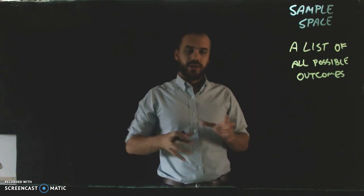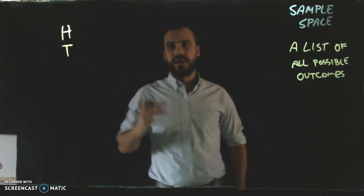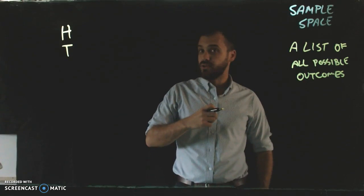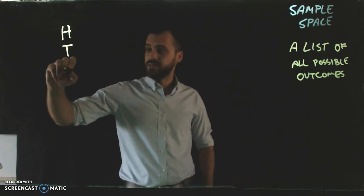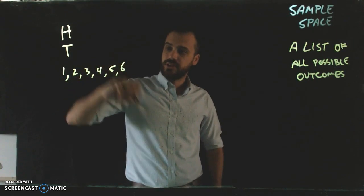So if you flip a coin, our sample space is heads and tails. If you roll a dice, our sample space is 1, 2, 3, 4, 5, 6.